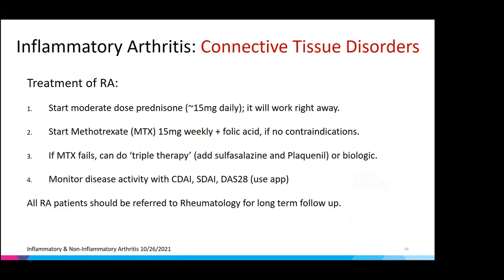For RA treatment: if you see a patient with RA, start treatment and refer to rheumatology so there's no delay. For an acute flare, start prednisone around 15 mg/day. First-line treatment is methotrexate 15 mg weekly with folic acid. If methotrexate fails or is contraindicated, options include triple therapy — adding sulfasalazine and hydroxychloroquine — or a biologic such as a TNF inhibitor. Monitor disease activity with CDI, SDI, or DAS28.